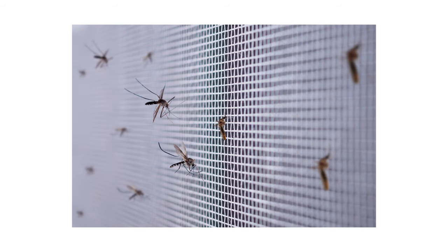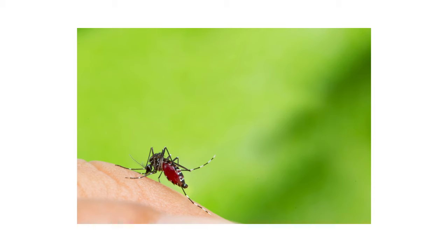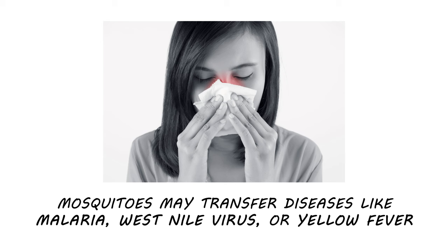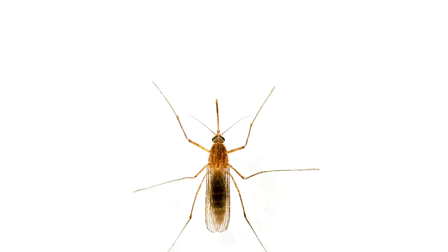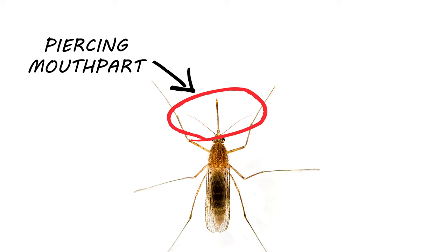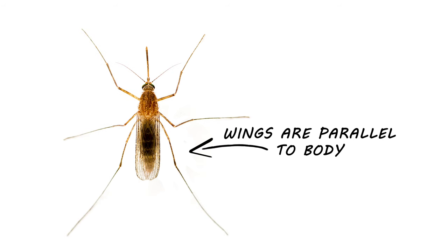Everyone knows mosquitoes are small flying insects that feed on our blood at any opportunity. Female mosquitoes need blood for reproduction and are vectors for diseases like malaria, West Nile virus, and yellow fever. Mosquitoes range from one-eighth of an inch to one-quarter of an inch in length. Only the females will have a long piercing mouthpart that they use to suck blood. When at rest, the wings are typically as long as the body and run parallel to the abdomen.